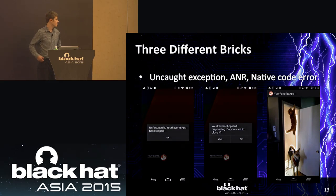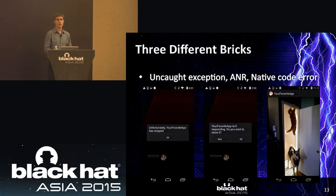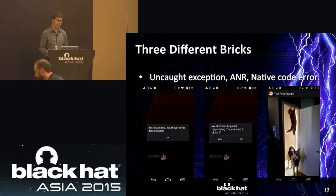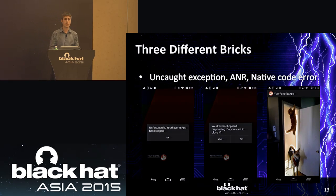Here are pictures of the three events. On the left is the uncaught exception, which force-closes the application and displays a system message to the user. The middle picture is the ANR event, which prompts the user whether they want to wait for the application to become responsive or kill it. The third is the native code error, which when done properly won't generate any message and will proceed to display whatever functionality was intended — in this case, just an image view.